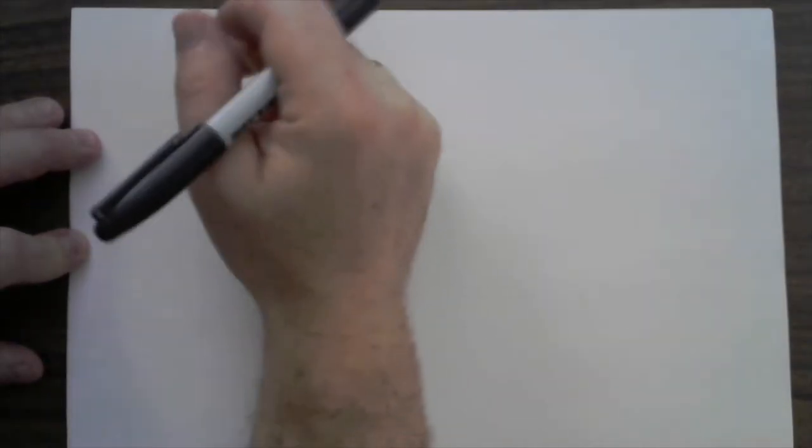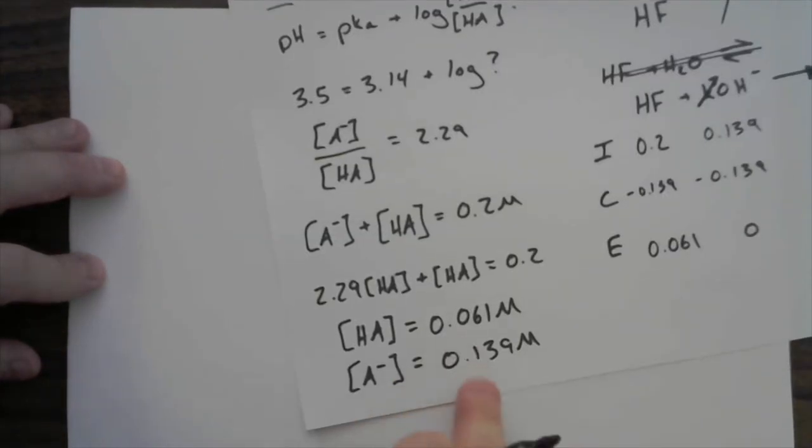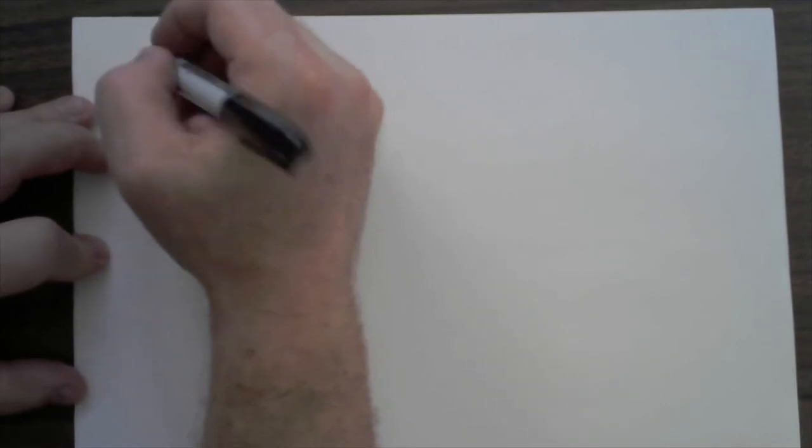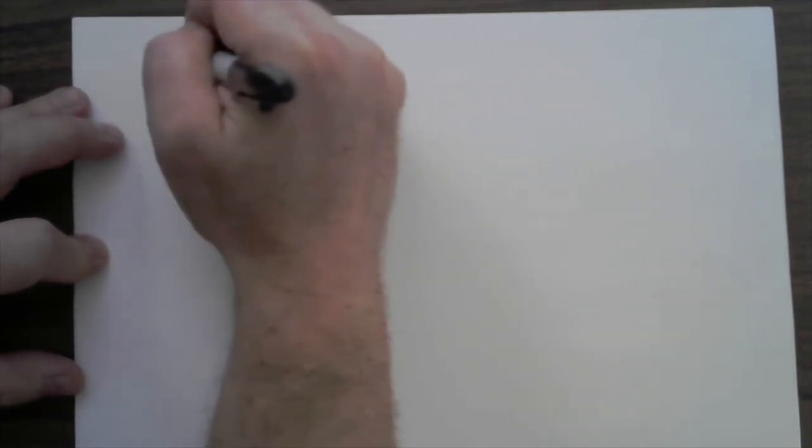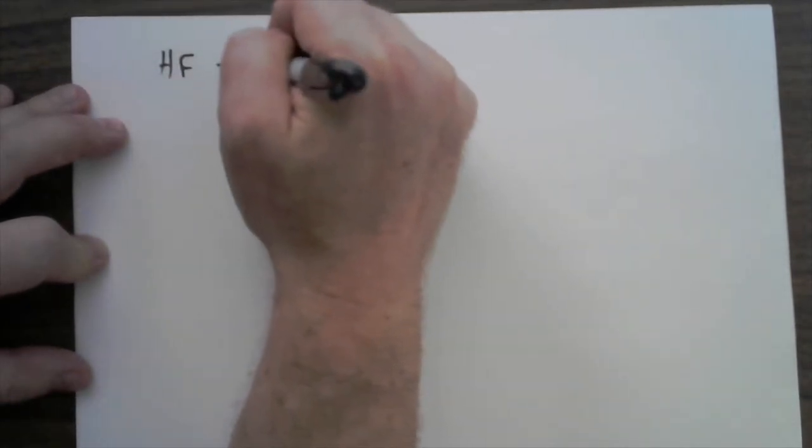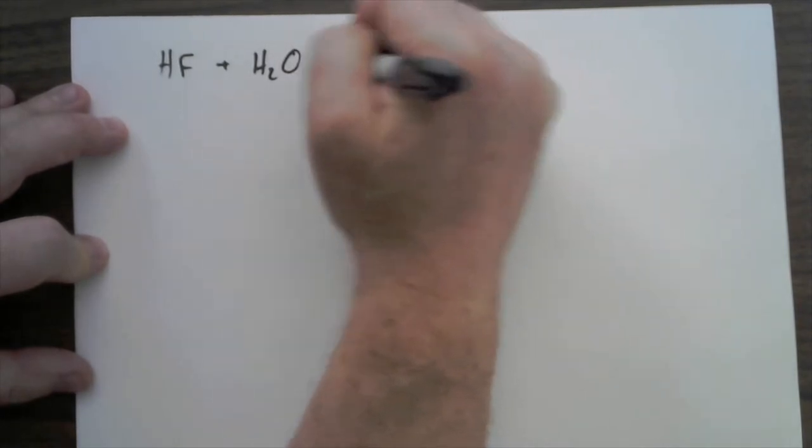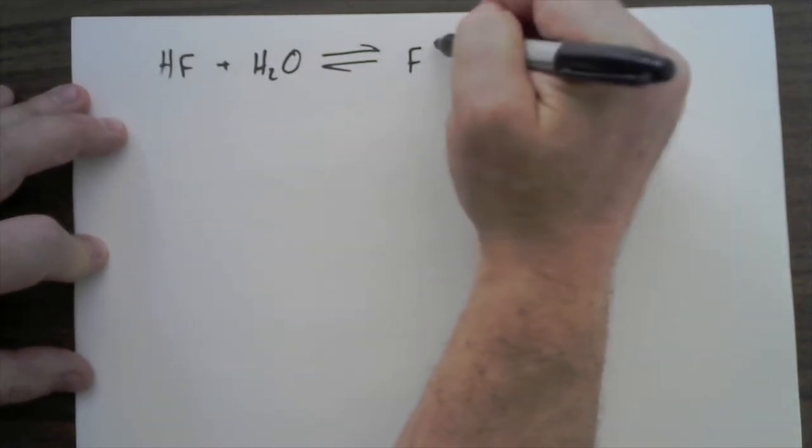I want to say, what would be the pH of a buffer that has—basically we're going to go back to this set of conditions here, but we're going to start with that information and say what would be the pH of the buffer. So I'm going to start here, and there's a method to the madness. I'm going to start with this original equation.